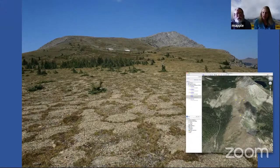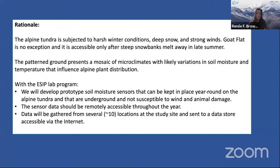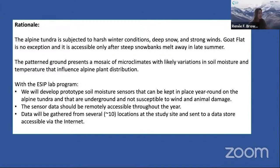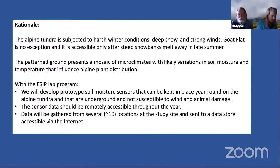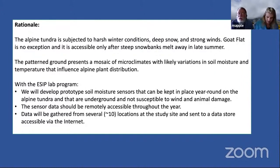Now I'm going to turn it over to James Gallagher. The rationale: the alpine tundra is a relatively harsh environment, and we want to develop sensors that can not only survive in this environment, but also broadcast the information they're sensing in more or less real time, so we can access that information without having to go to these locations. Being able to access them throughout the year means we can avoid problems that develop with things that can only be accessed once every three or four years.